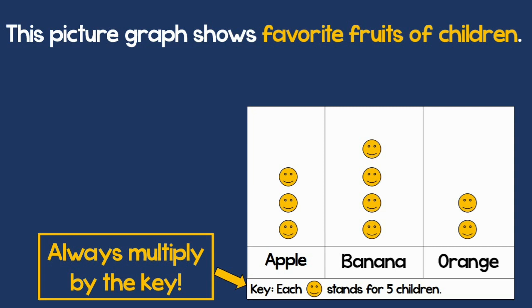I have 3 faces for apple. 3 faces times 5 is 15. 4 faces for banana. 4 faces times 5 is 20. And 2 faces for orange. So 2 times 5 is 10. So 15 children like apples, 20 children like bananas, and 10 children like oranges.